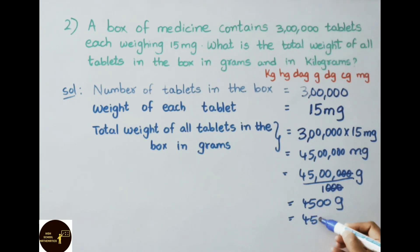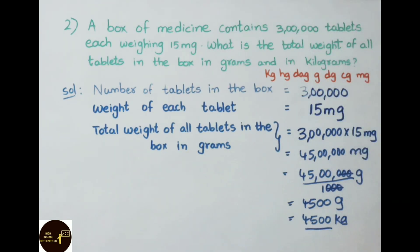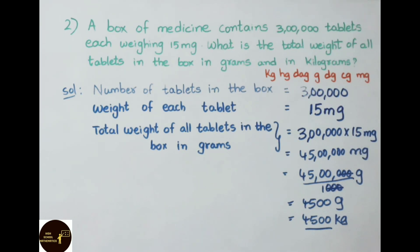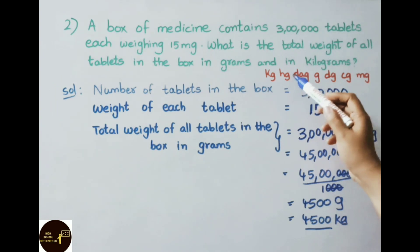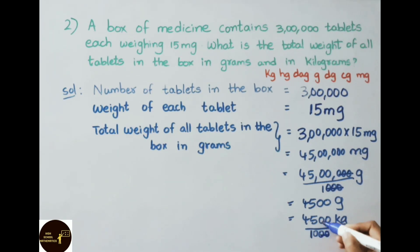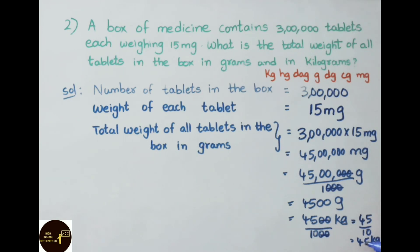Now we need to convert 4,500 grams into kilograms. From grams to kilograms is 3 places, so again we divide by 1000. The zeros cancel and we get 45 divided by 10, which means 4.5 kilograms. Therefore, the weight of all tablets in grams is 4,500 grams, and in kilograms is 4.5 kg.